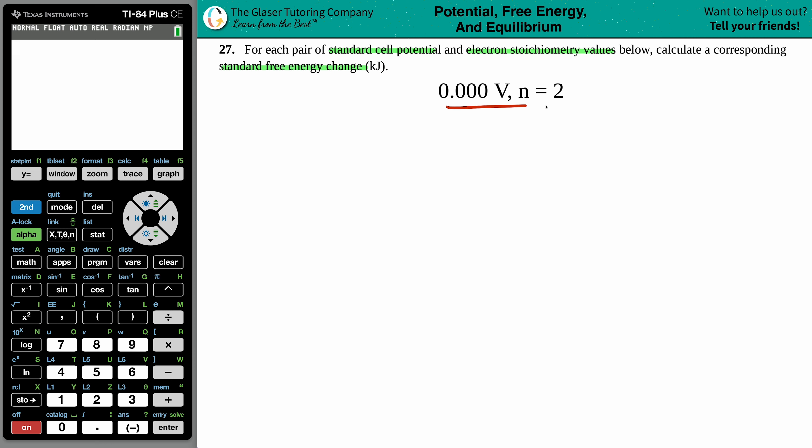Okay, so this is the only two pieces of information that they gave us. Now they're telling us that the standard cell potential is 0.000 volts. I know that this is the standard cell potential because a potential is always going to be linked to volts. Specifically, this is your E cell.